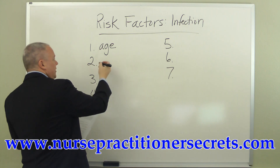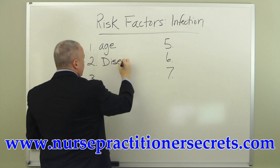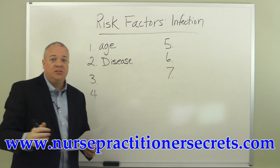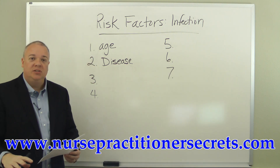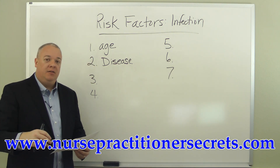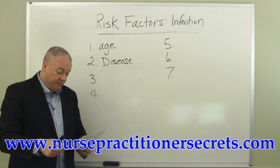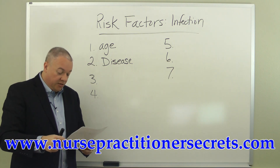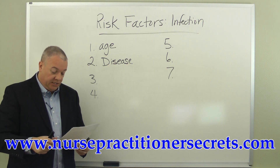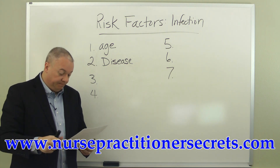The second thing we want to talk about is disease. Certain diseases suppress the immune system or make it not work as optimally, and therefore lead to increased risk of infection. Among these are diabetes and leukemia — both of these particular diseases increase the risk of infection.